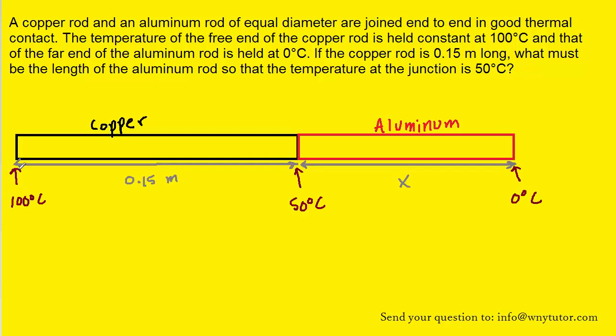We have the temperature of the free end of the copper held constant at 100 degrees Celsius, the temperature at the junction is 50 degrees Celsius, and the temperature at the free end of the aluminum rod is 0 degrees Celsius. We were told that the length of the copper rod is 0.15 meters, and we are searching for the unknown length of the aluminum rod.